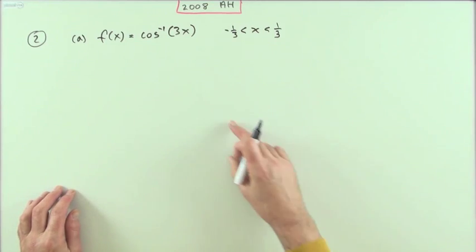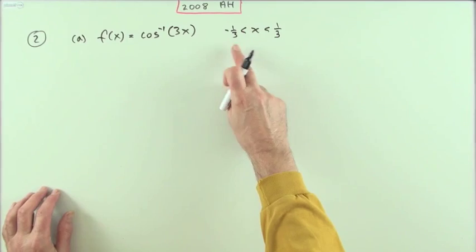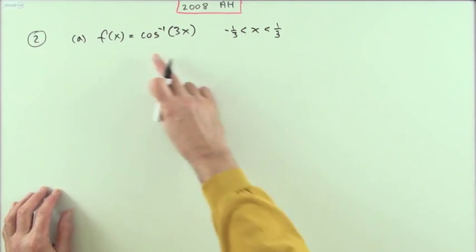That's why that part in there can only go from one to negative one. So x itself can only be a third to negative a third. But you don't need to use that just to do this part. You're just concentrating on that.